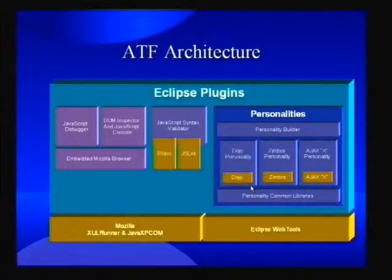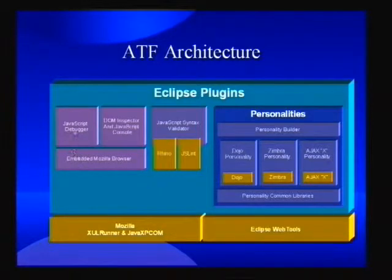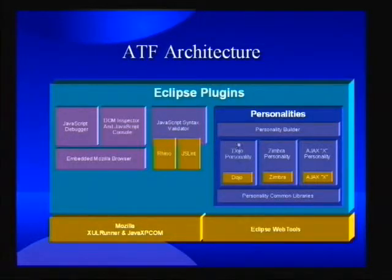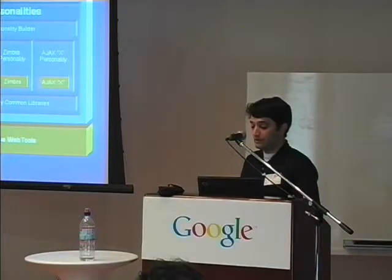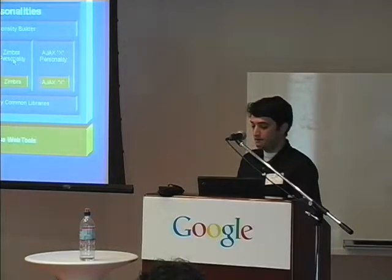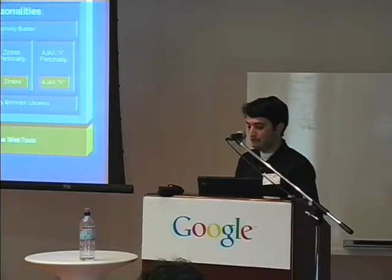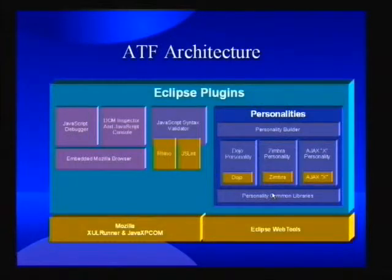Here's a more detailed chart of the pieces we're building. The golden pieces are external pieces we're reusing. It breaks down into two pieces: the JavaScript/DHTML world — we have a JavaScript debugger, DOM inspector, JavaScript syntax validator to catch errors and typos. On the right-hand side is what we call 'personalities,' our abstraction for Ajax toolkits to make them easier to deal with. Right now we support three: Dojo, Zimbra, and Rico. It's a pluggable system with a template-driven, wizard-driven builder.